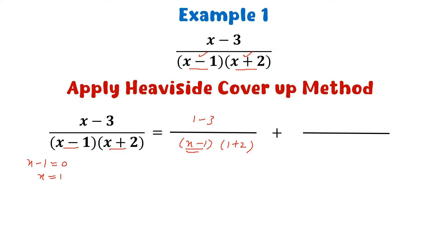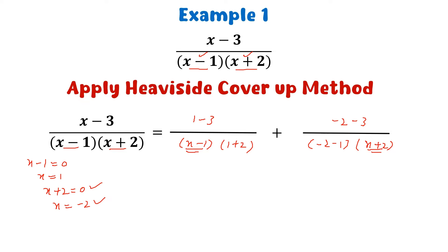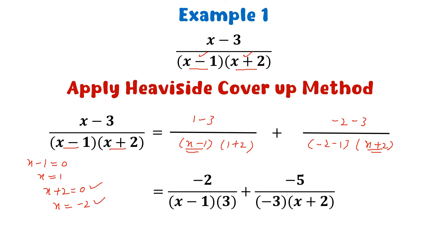Likewise, we put x plus 2 equal to 0 and get x equal to minus 2. Again we replace x by minus 2, but not in the factor x plus 2, because we have obtained the value of x to be minus 2 from x plus 2. This is the Heaviside cover-up method. We simplify these fractions and get the result.